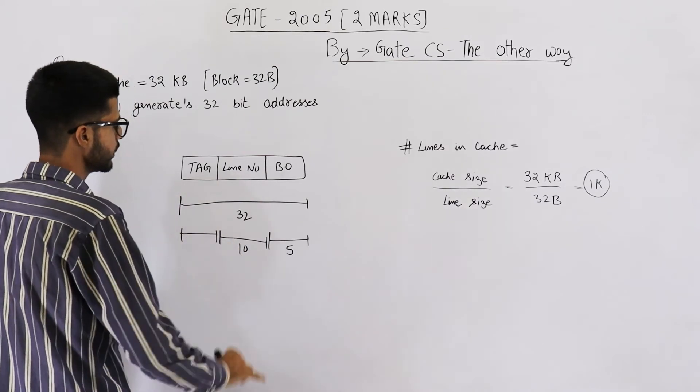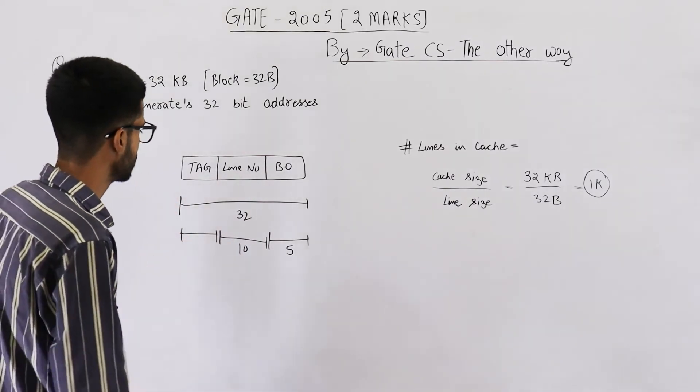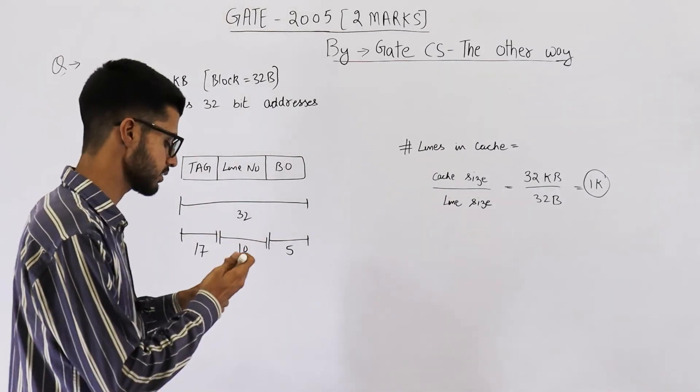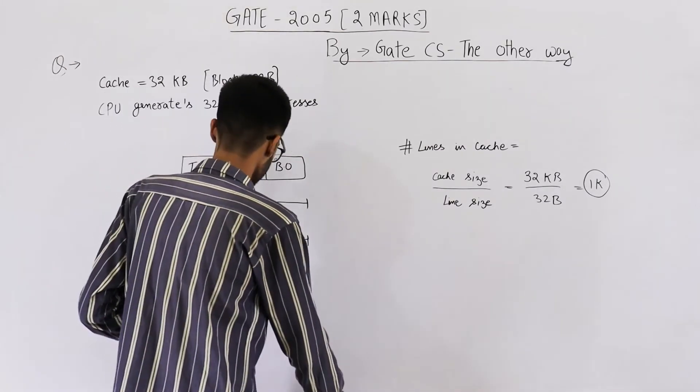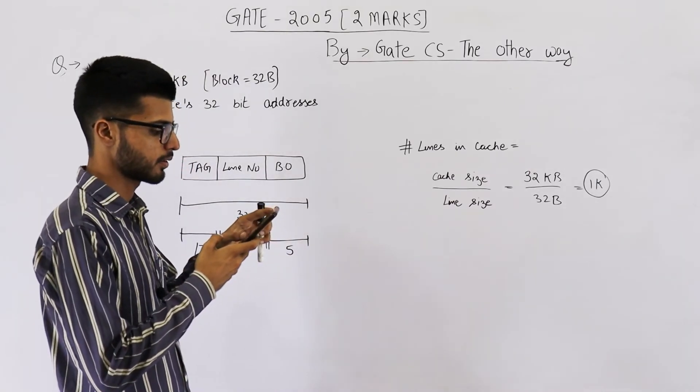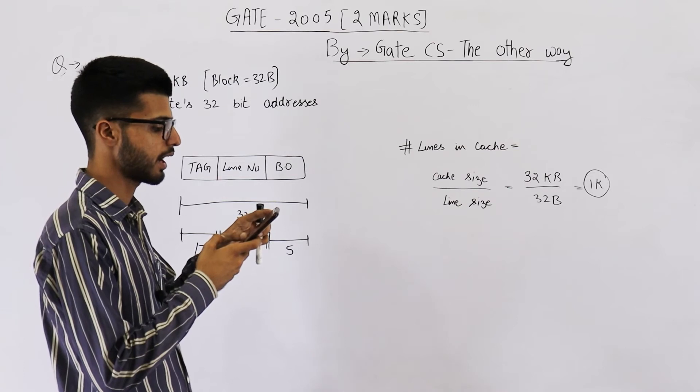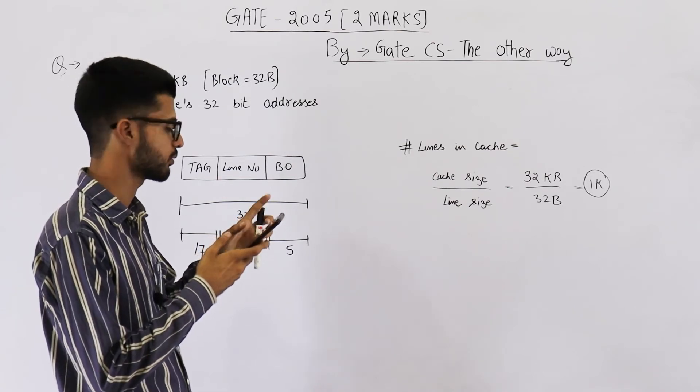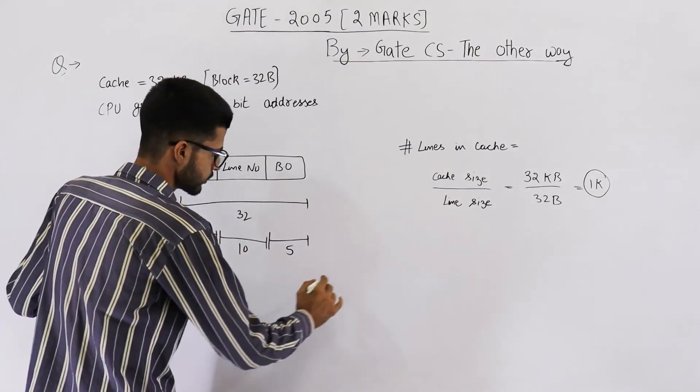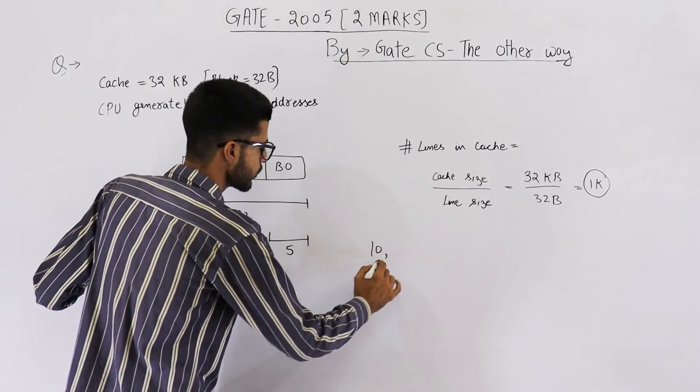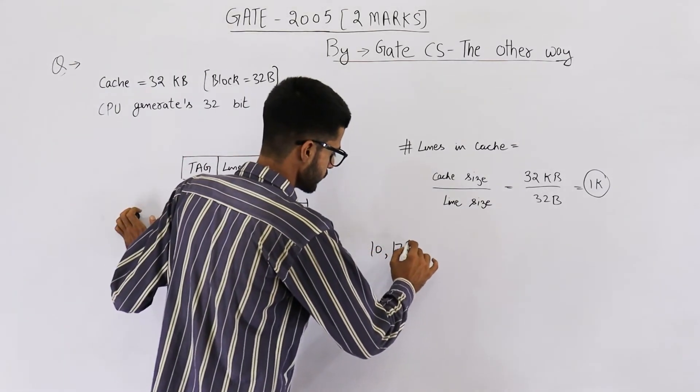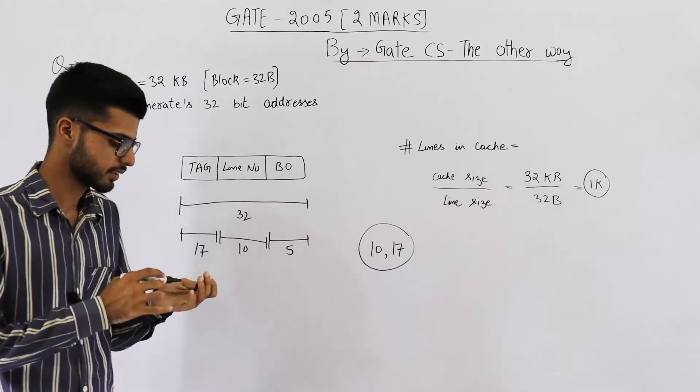So you can easily calculate that tag will be of 17 bits. So in the question you were asked to find out number of bits needed for cache indexing and number of tag bits. So cache indexing means 10 bits. So your answer will be 10 comma, tag is 17 bits. So this is your answer 10 comma 17.